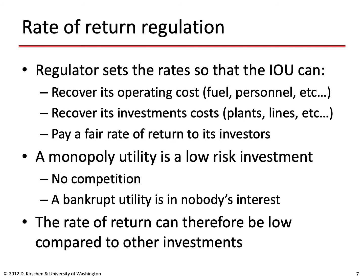Regulation in the United States is typically done on the basis of what's called rate of return regulation. Under this framework, the regulator sets the rates that the investor-owned utility can charge so that the company can cover its operating costs — the cost of fuel needed to generate electricity, the cost of personnel, and so on. Those rates should also cover what is needed to recover investment costs, such as the cost of building plants and lines, and they should provide a fair rate of return to investors.